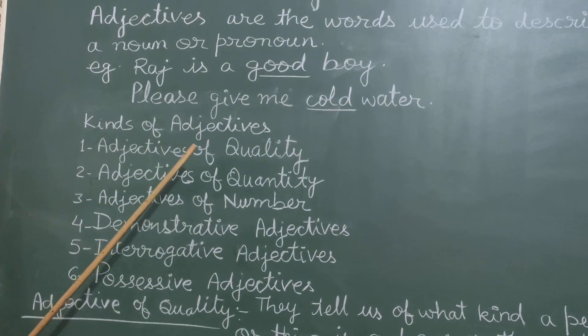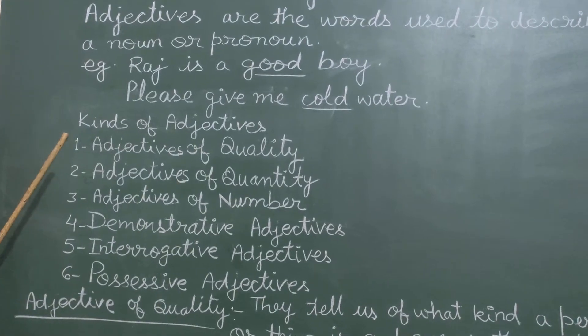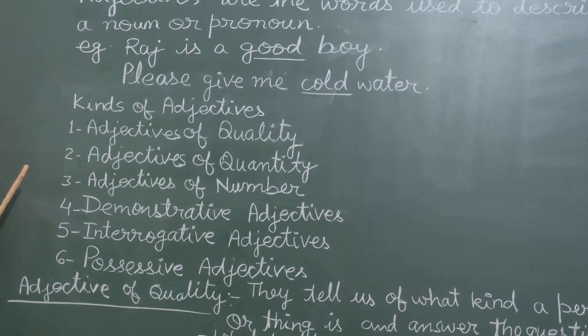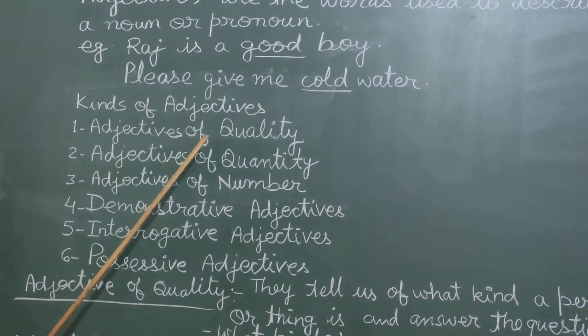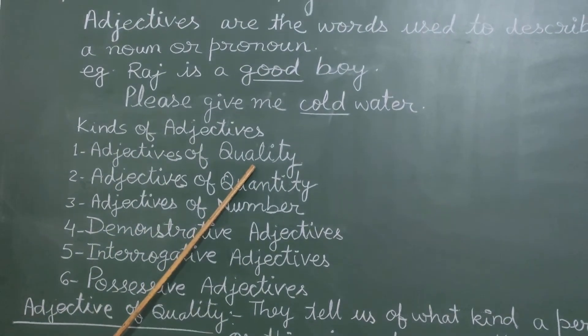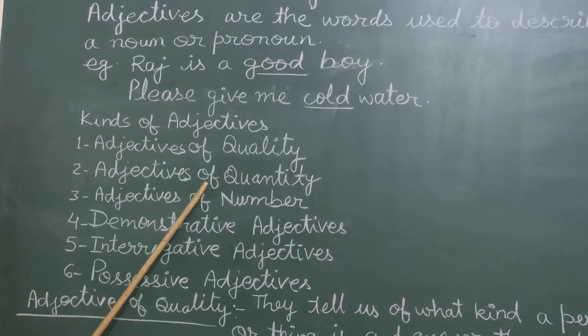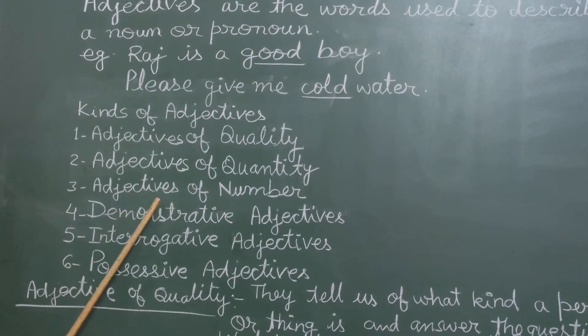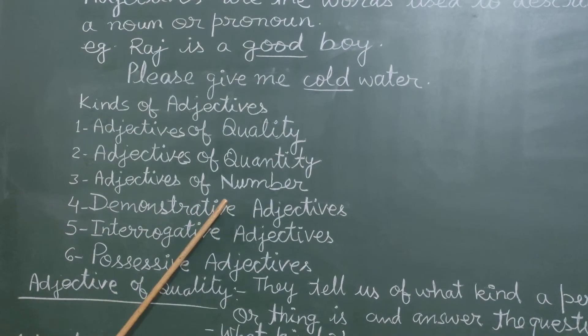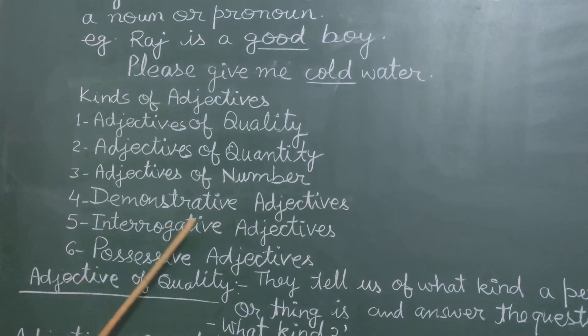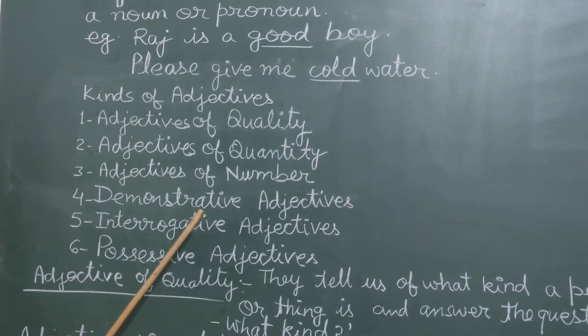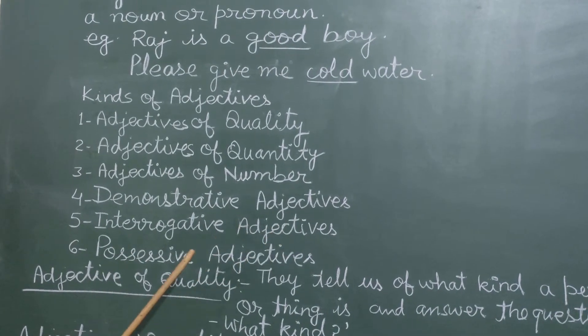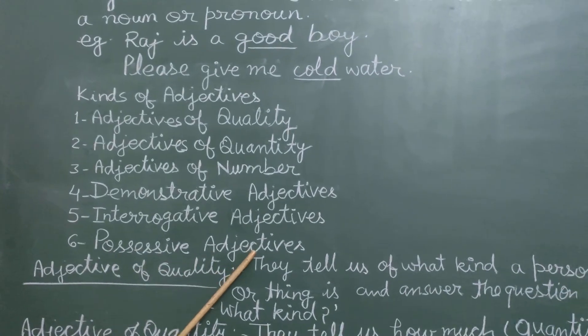Then kinds of adjectives. In this topic we will discuss six kinds of adjectives. First one is adjectives of quality. Second, adjectives of quantity. Then adjectives of number. Next is demonstrative adjectives. Then interrogative adjectives. And sixth one is possessive adjectives.